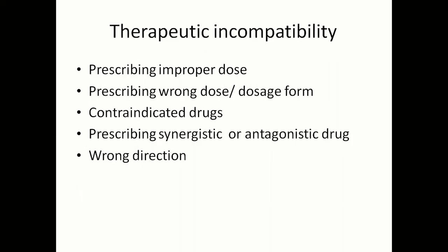The last type of incompatibility is therapeutic incompatibility. First is prescribing an improper dose. If the dose of a particular drug is not properly prescribed — sometimes given in mg, sometimes in microgram — you have to be careful about the unit. This is especially important for potent drugs, where even 1–2 mg shows a therapeutic effect, and a slight deviation of 0.1 mg will cause large variation in response.